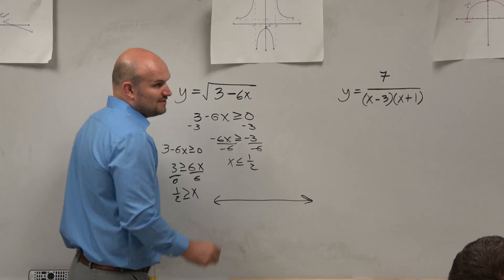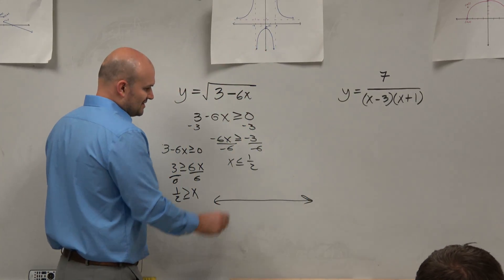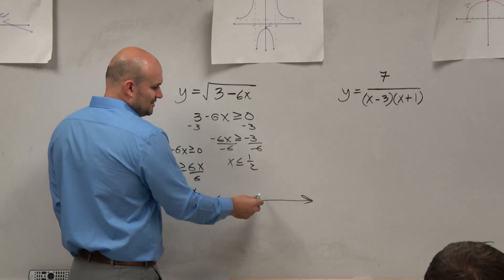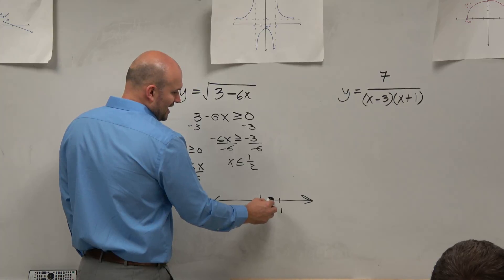So some of you might be able to write it from there, and that's fine. Some of you might be like, you know what? I'm going to draw the inequality of this for me to better make sense of this. This is saying x has to be less than or equal to 1 half. OK. Well, if here's like 0, and here's 1, well, then here's 1 half.